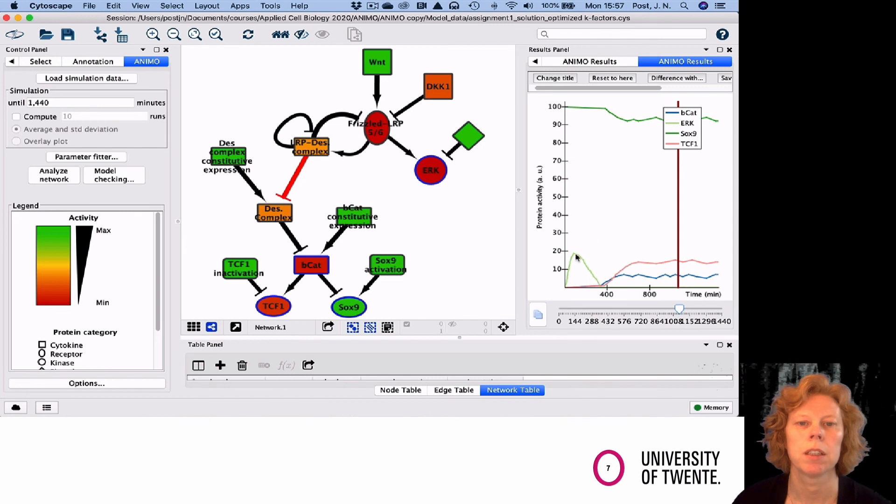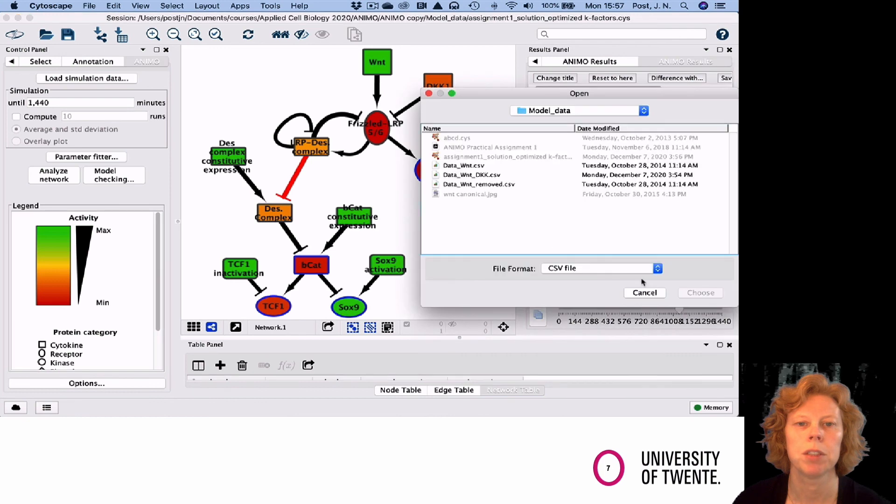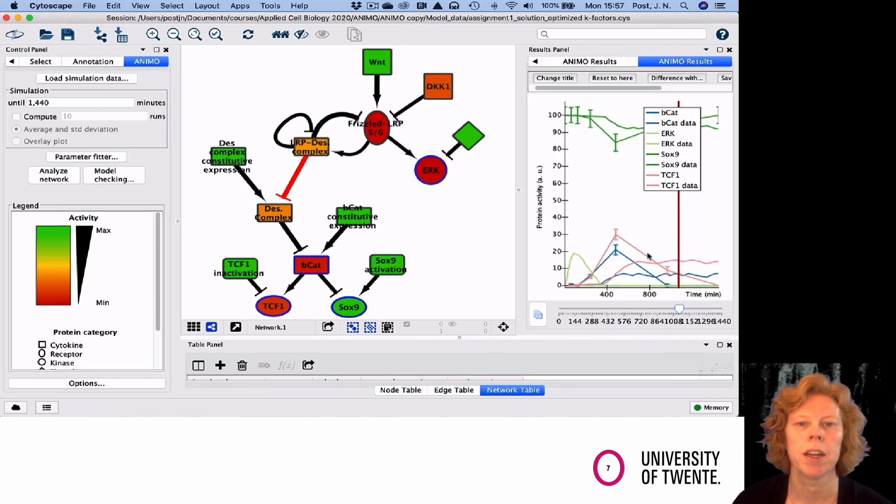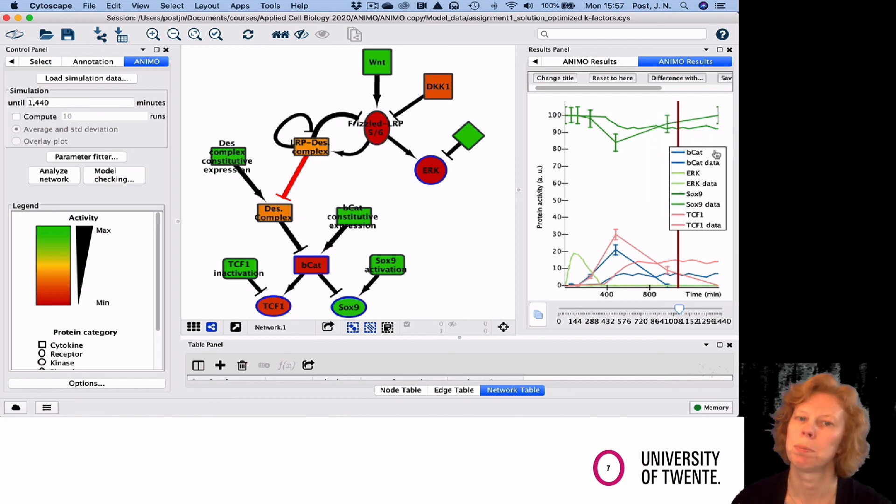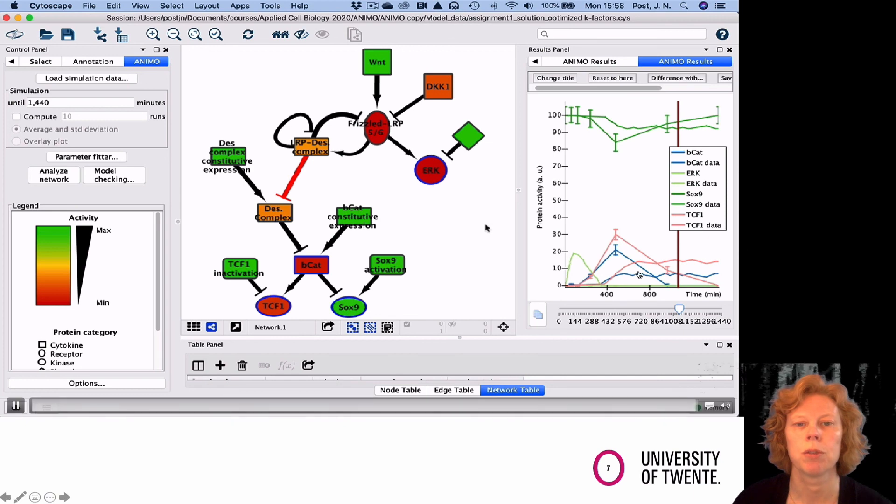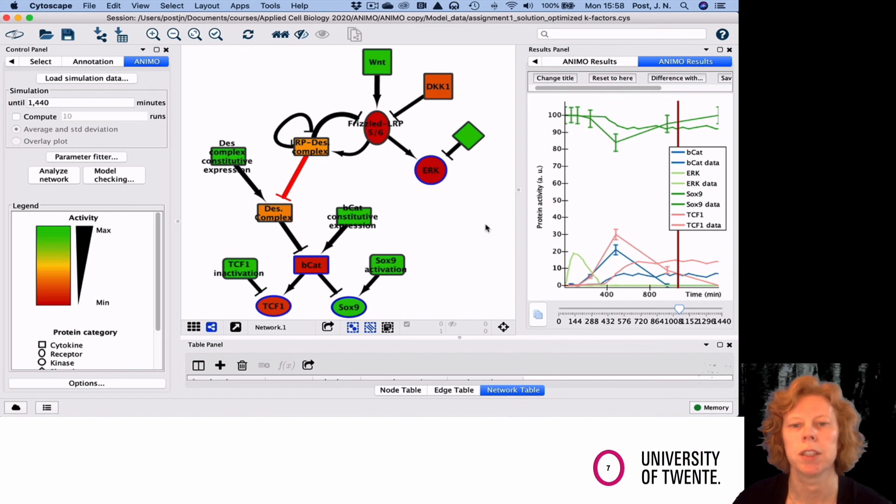Then you can right-click on one of the lines again, add data from CSV, import your data file again, and now you can compare. What you see is that even though it's not perfect, it's much better than what it was. Then you get to make the choices whether or not you optimize your parameters a little further to, for example, show this peak activity, or that you want to continue like it is.